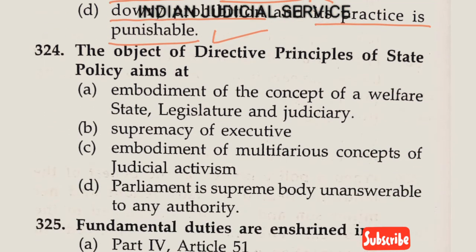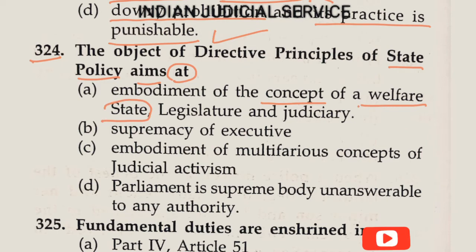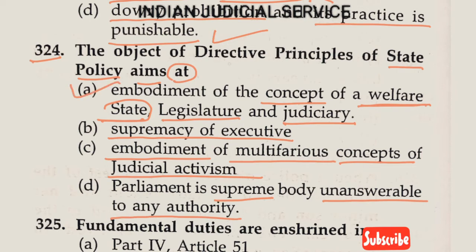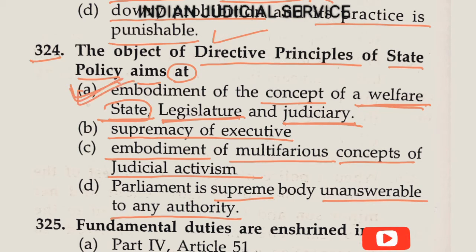Question Number 324: The object of Directive Principles of State Policy is aimed at — Option A: embodiment of the concept of a welfare state — the main object of Directive Principles is the welfare of the state; Option B: supremacy of executive; Option C: embodiment of the concept of judicial activism; Option D: parliament is the supreme body and unanswerable to any authority (wrong — in India, the constitution is the supreme body). The answer is Option A.